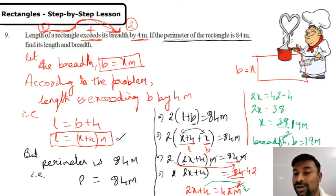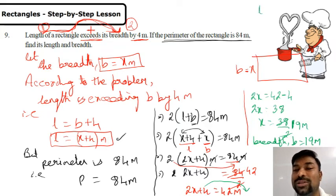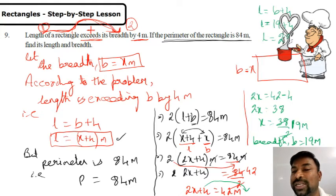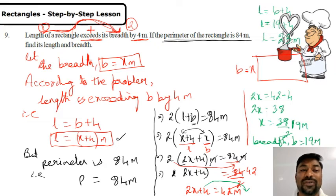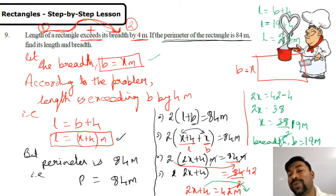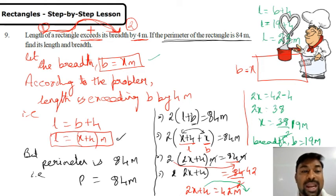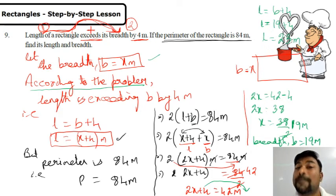Breadth b equals 19 meters. Now find the length. Length equals breadth plus 4 — that is 19 plus 4 — so length equals 23 meters. Recap: length of rectangle exceeds breadth by 4 meters. I took breadth as x because length is compared to breadth — always take the second term as the variable. Exceeds means plus, so length equals x plus 4.